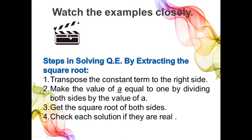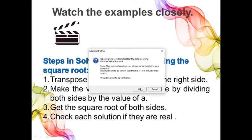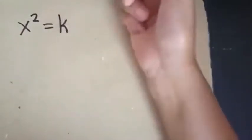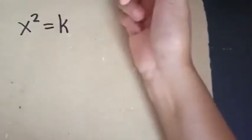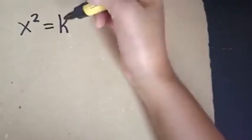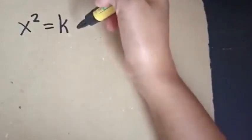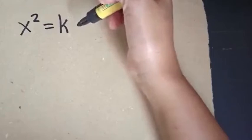Let us watch the examples closely. To apply this method, we need to write the quadratic equation into the form x squared equals k. Otherwise, if the quadratic equation could not be written into this form, then we could not make use of this method.